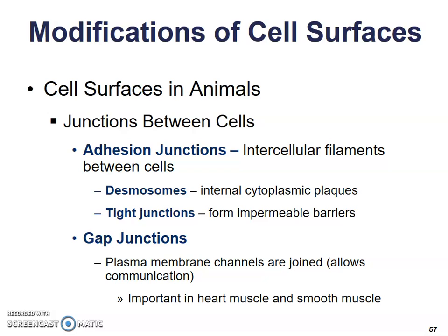Moving on to modifications of cell surfaces in animals — there are junctions between cells. There are adhesion junctions with intercellular filaments between cells. There are two main types: desmosomes, which have internal cytoplasmic plaques, and tight junctions, which form impermeable barriers. Gap junctions are where plasma membrane channels are joined and allow direct communication from one cell to the next.